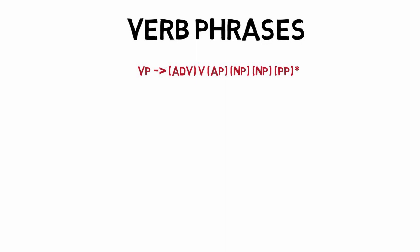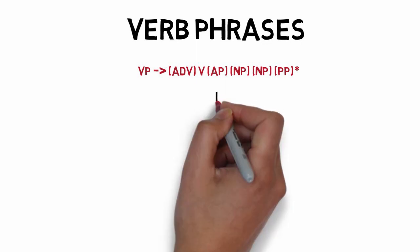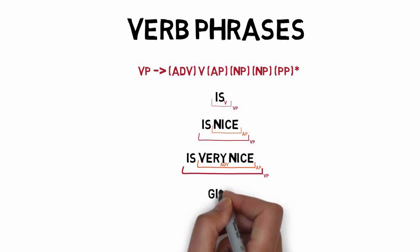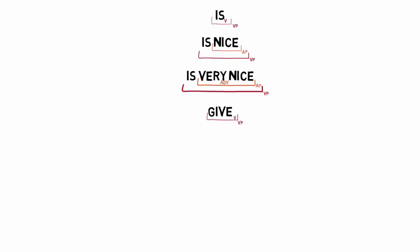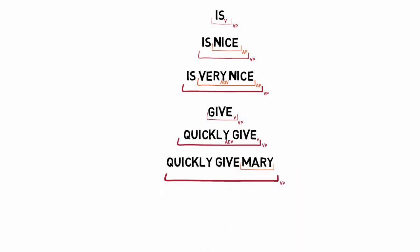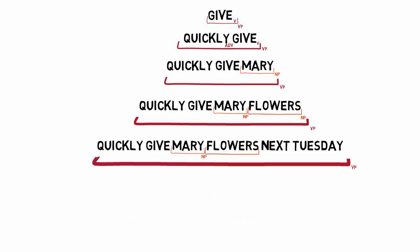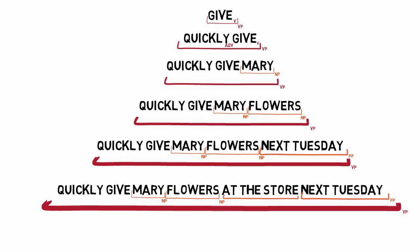This sort of grammar would generate all of the following phrases or sentences: is, is nice, is very nice, give, quickly give, quickly give Mary, quickly give Mary flowers, quickly give Mary flowers next Tuesday, or even quickly give Mary flowers at the store next Tuesday. Note that in these phrases, even the prepositional phrases could have more embedded noun phrases, and noun phrases could have more embedded prepositional phrases.